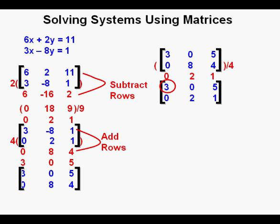The next thing we'll have to do is make this 3 a 1. And to do that we'll divide the equation by 3, which is the same as multiplying by 1 third. And that gives us a new row of 1, 0, and 5 over 3. So now our top row is in perfect shape.